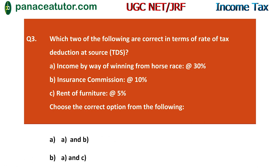The last question: which two of the following are correct regarding the rate of TDS? House rent at 30% and insurance commission at 10% — the correct answer is A and B. Rent on furniture is not 5%; we discussed the correct rate earlier. These were questions from UGC NET December 2019, where 4 questions came from TDS and TCS.